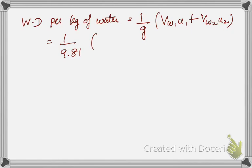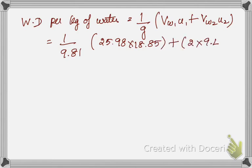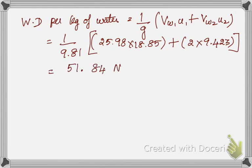Substituting values: Work done per kg = (1/9.81) × (25.98 × 18.85 + 2 × 9.423). Be sure to place brackets correctly to avoid mistakes. The result is 51.84 N·m/N. The second part is complete.